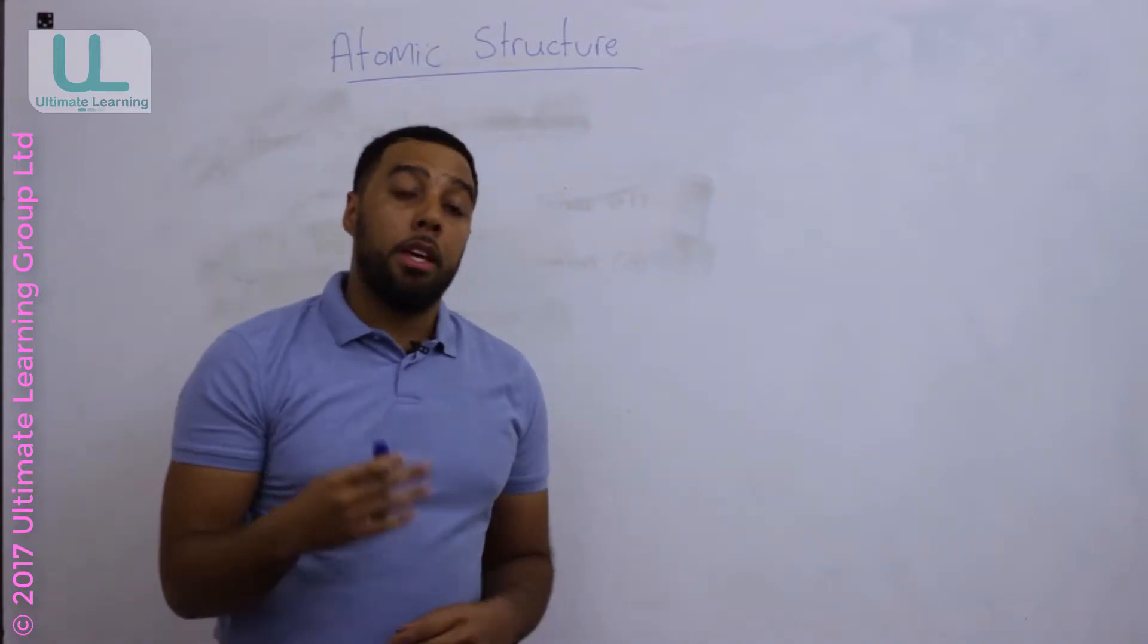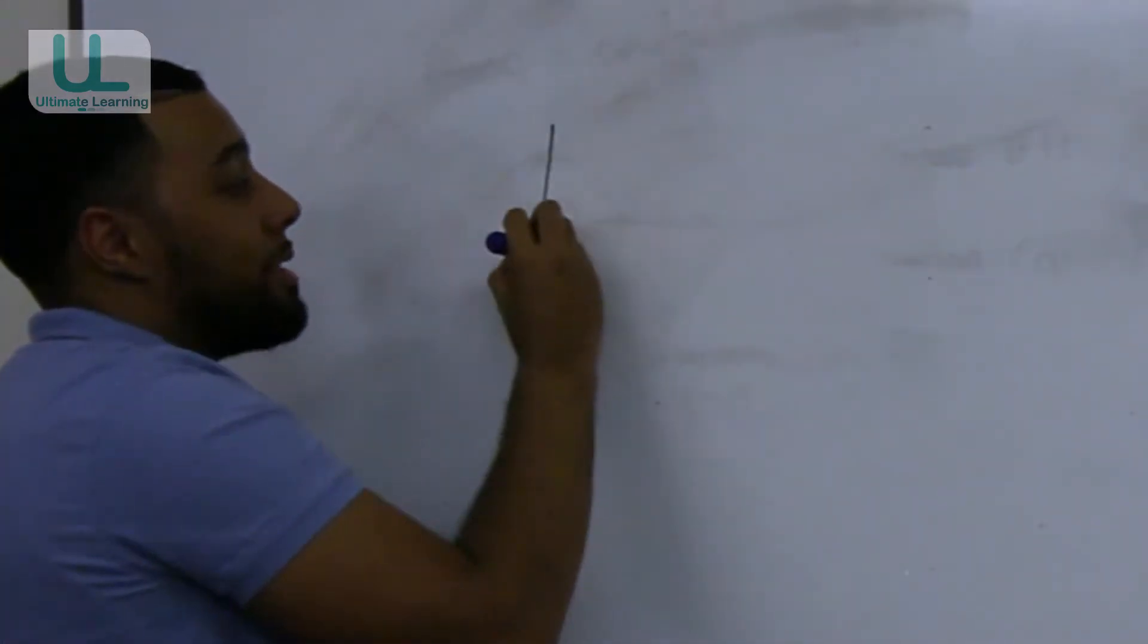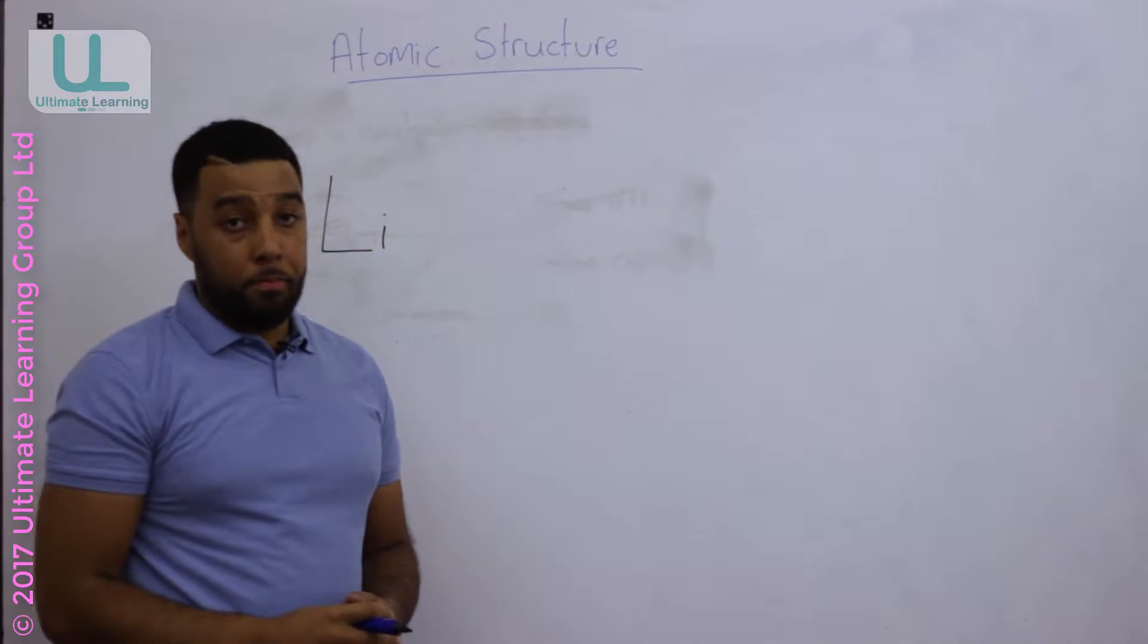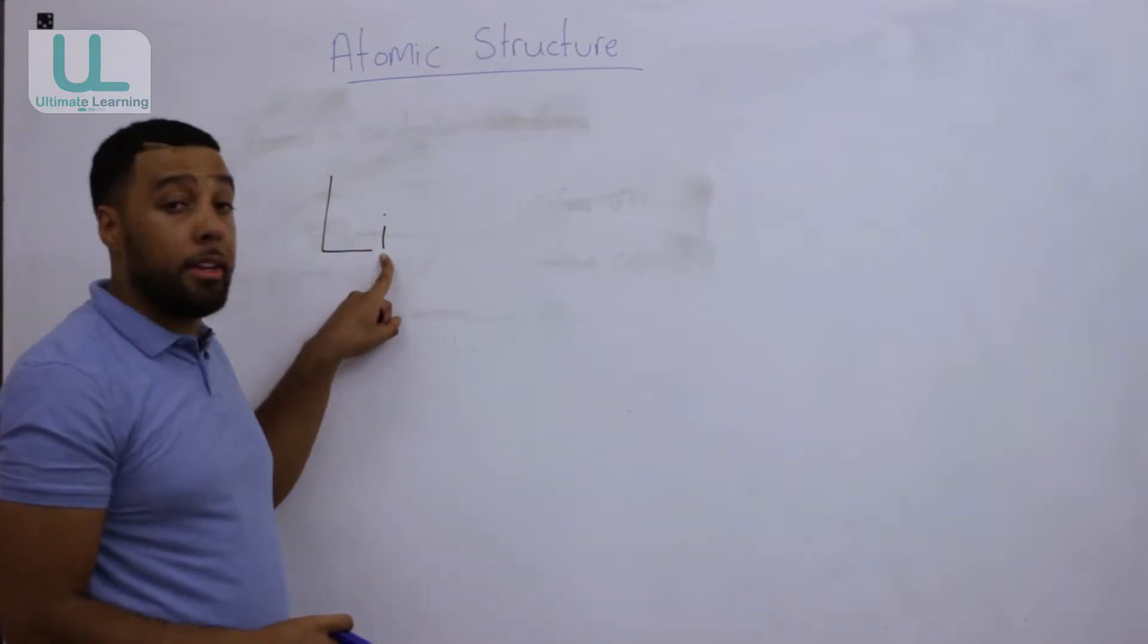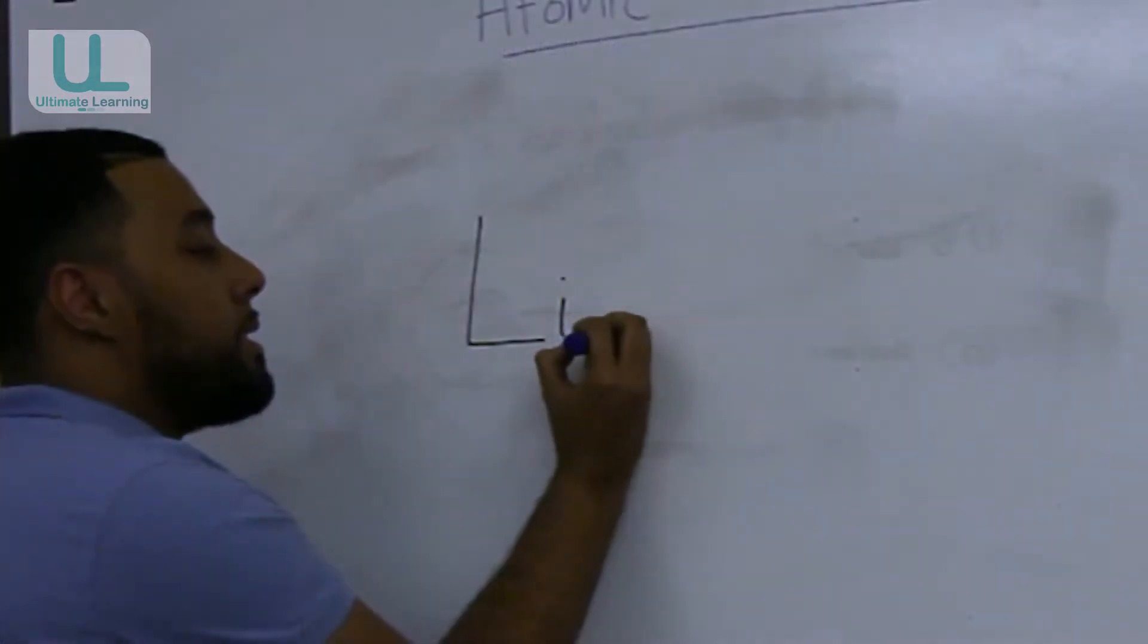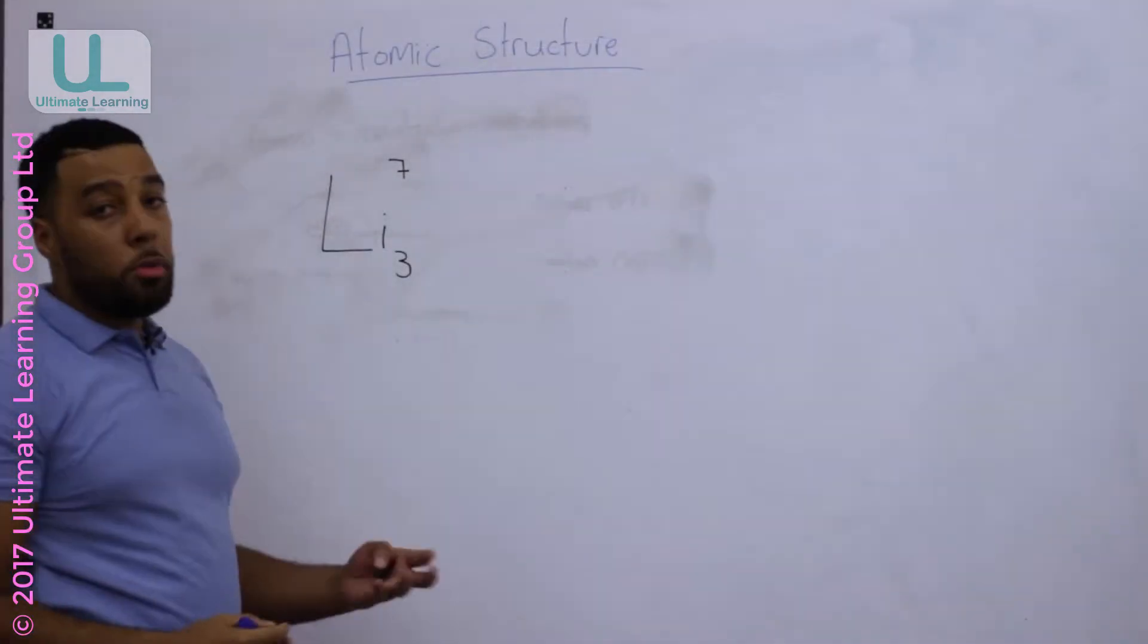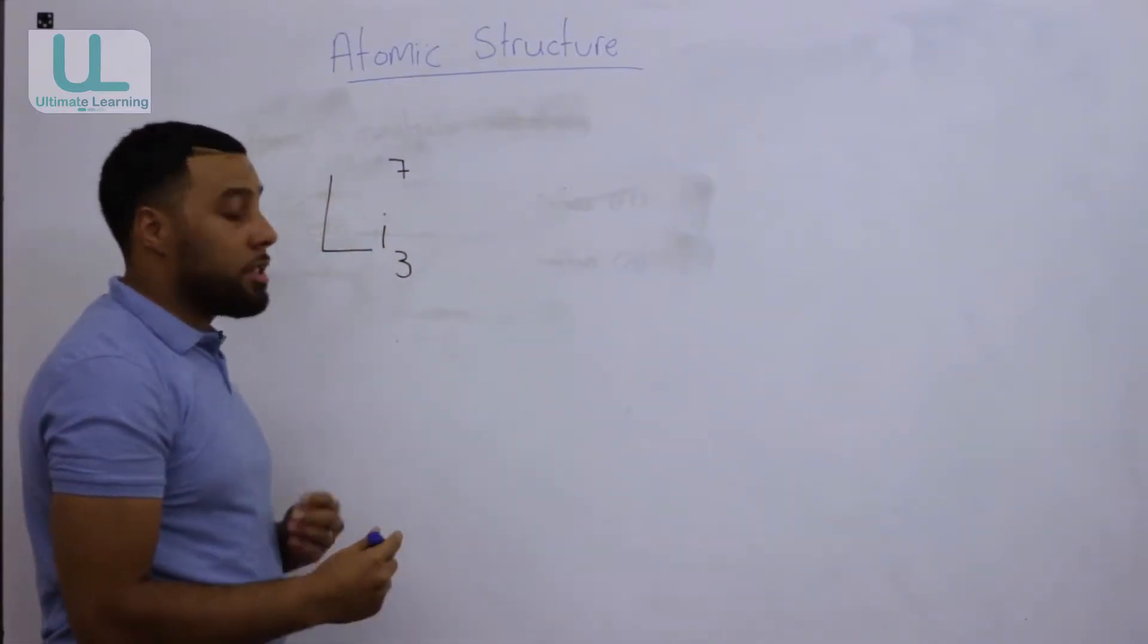Let's look at one of those elements as an example. Now lithium has the chemical symbol Li, and lithium has got two numbers attached to it. These two numbers act as like a signature for lithium.